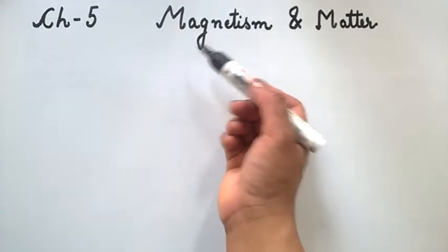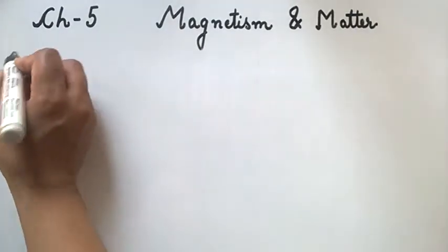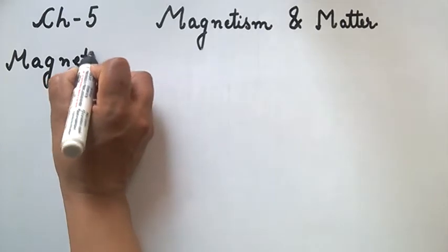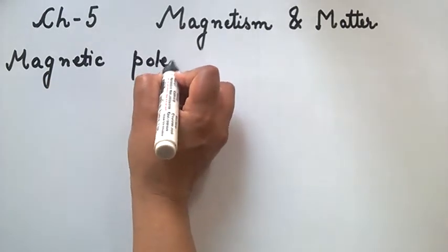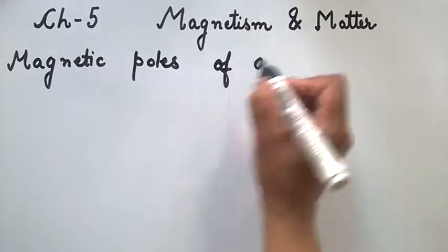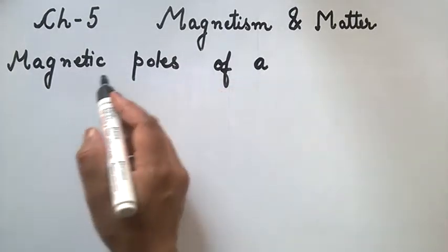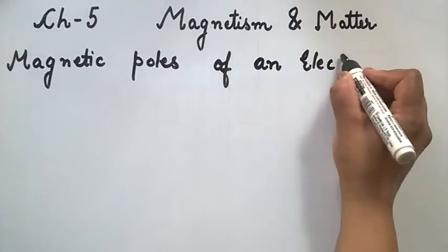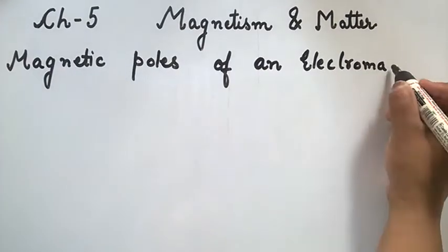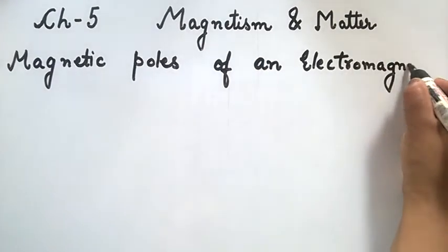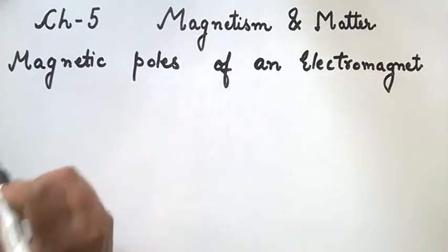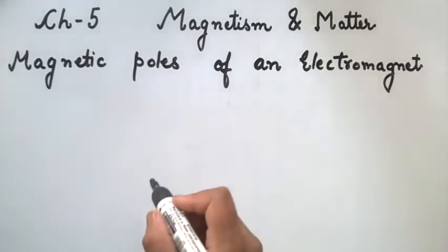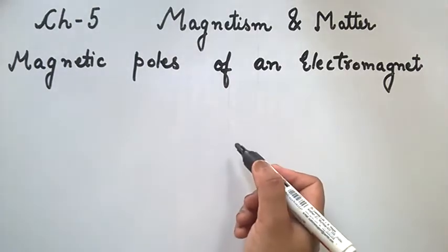In continuation with Chapter 5, i.e. Magnetism and Matter, let's study another topic. We have studied in our previous lecture about the electromagnet and we also know that a bar magnet behaves like a solenoid. We have studied their magnetic field lines in the previous lecture.